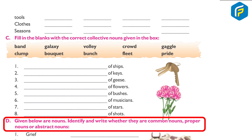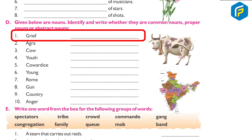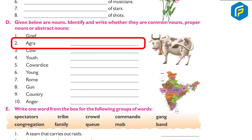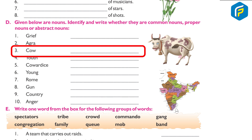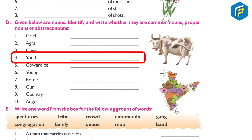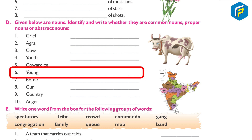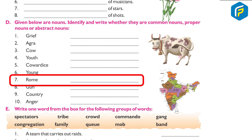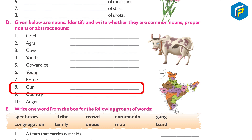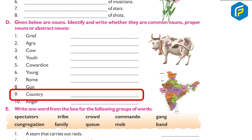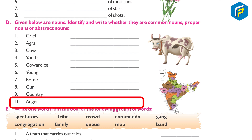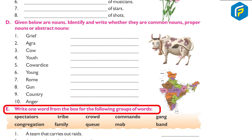(D) Given below are nouns; identify and write whether they are common nouns, proper nouns or abstract nouns. 1. grief — abstract noun; 2. Agra — proper noun; 3. cow — common noun; 4. youth — common noun; 5. cowardice — abstract noun; 6. young — common noun; 7. Rome — proper noun; 8. gun — common noun; 9. country — common noun; 10. anger — abstract noun.